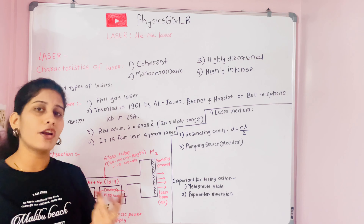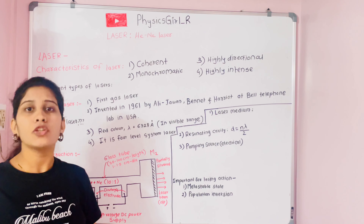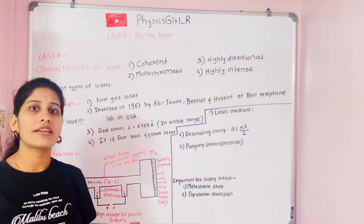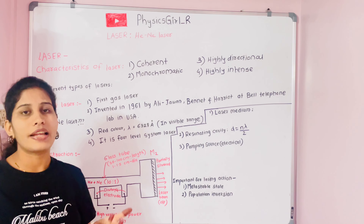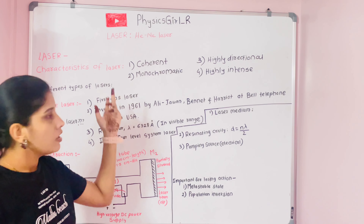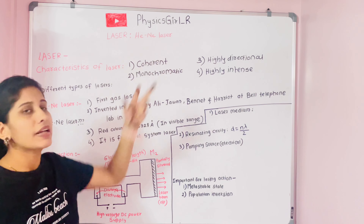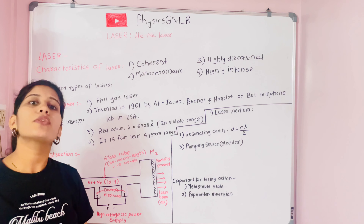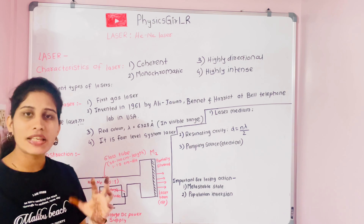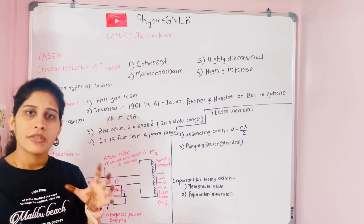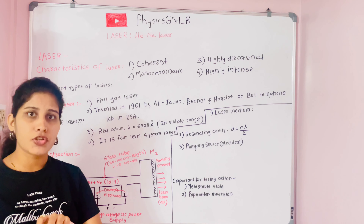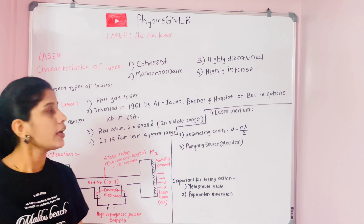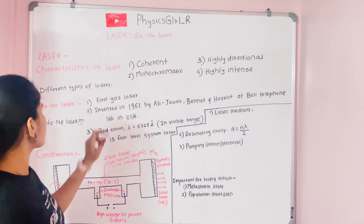Examples include: the ruby laser for solid-state, gallium arsenide laser for semiconductor, helium-neon laser for gaseous type, and tunable dye laser for dye-type lasers. These are the different types of lasers categorized according to the construction material used.